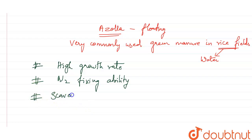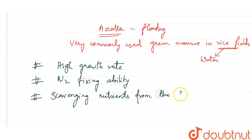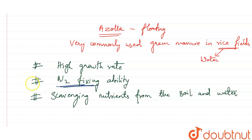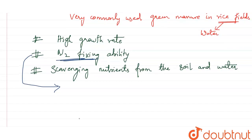Most importantly, they help in scavenging the nutrients to the plant from the soil and water. Here we saw the second point: they aid in the nitrogen-fixing function. This function is given to Azolla by its symbiotic relationship with a cyanobacteria.